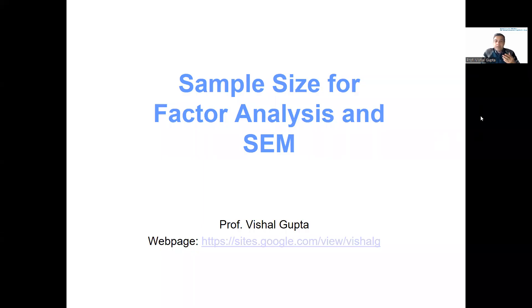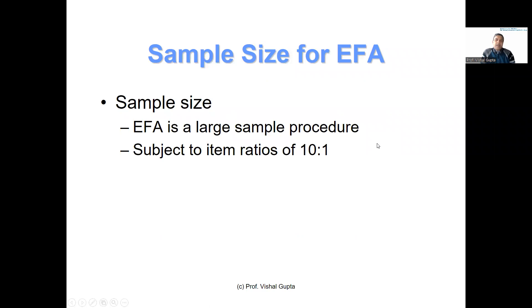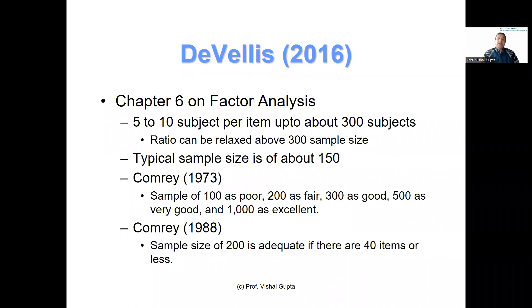Now we know that both exploratory factor analysis and structural equation modeling are a large sample technique. It is said that if you have one item, then you should typically have 10 respondents or subjects in your sample. That means if you have a scale of 40 items, you should have a sample size of 400 subjects or 400 respondents. But let me tell you, this is not exactly right.